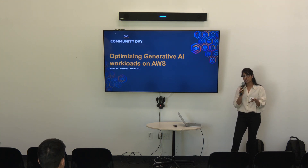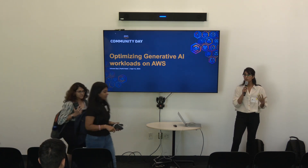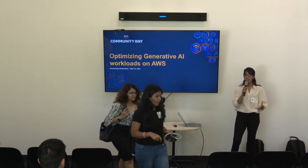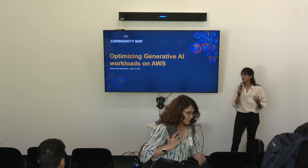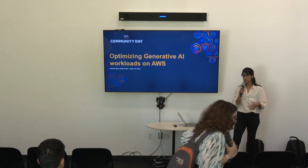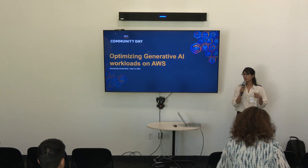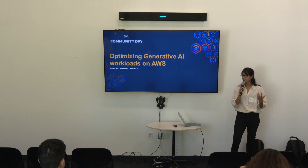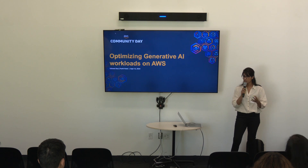For the talk today, we're going to be talking about optimizing generative AI workloads on AWS. When I talk about optimization, I'm not just talking about performance efficiency or operational efficiency — I'm also talking about optimizing for scale, for sustainability, and for cost. When I say sustainability, I mean that you're optimizing on resource efficiency.